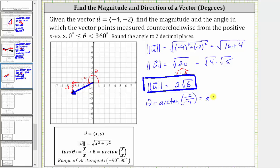Simplifying, we have theta equals arc tangent of one-half. Now we'll go to the calculator.